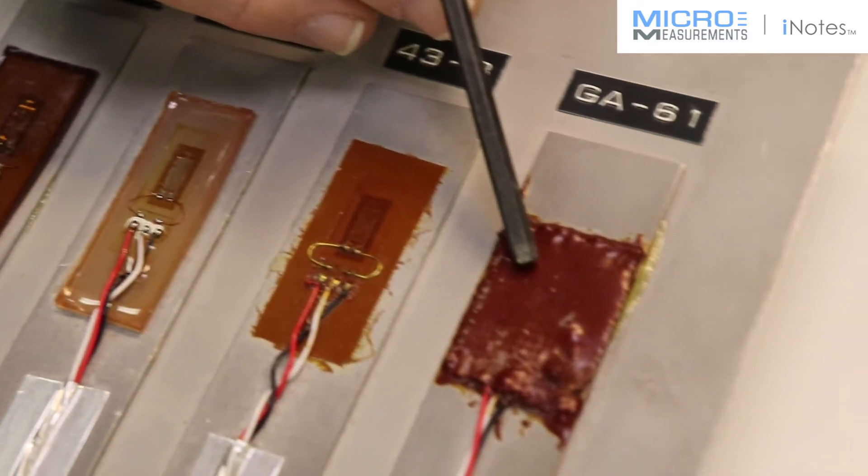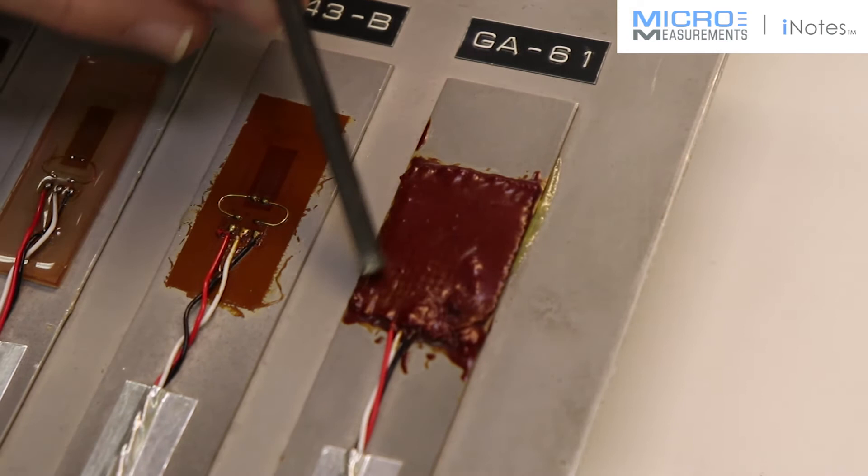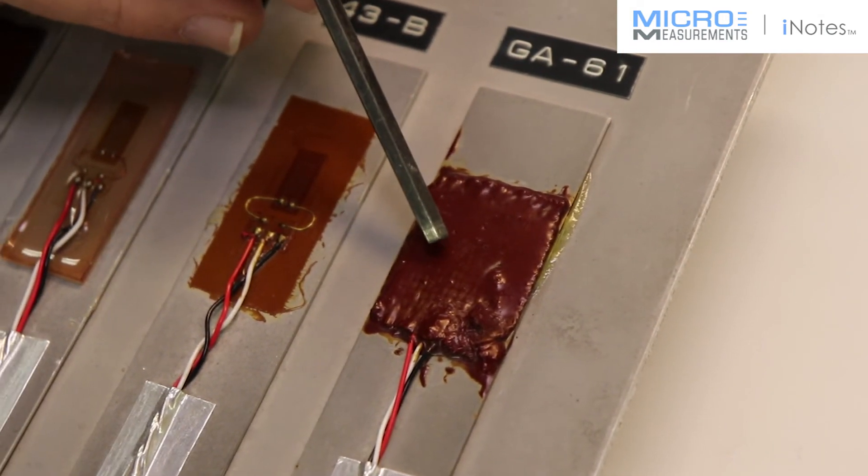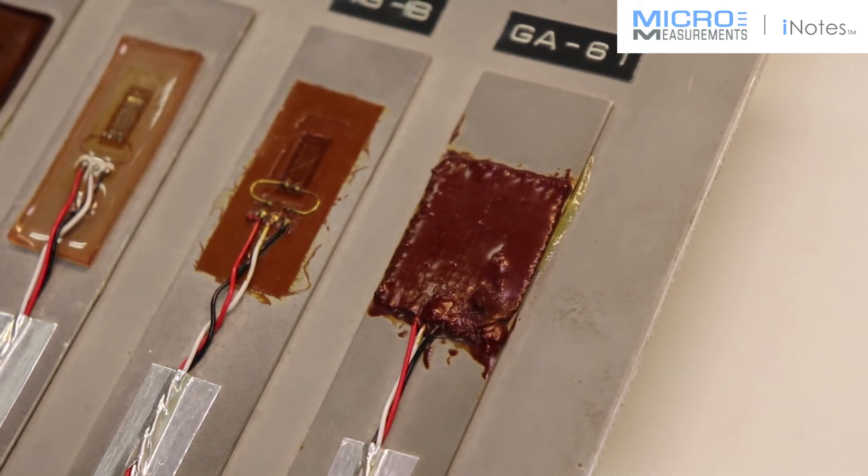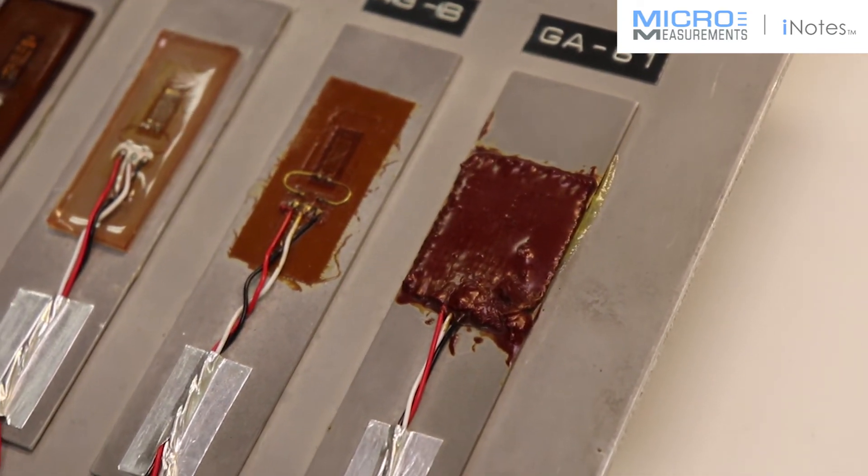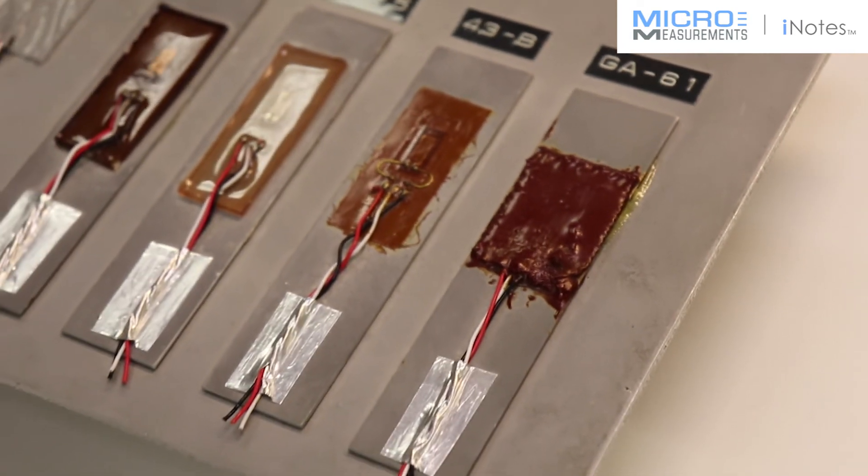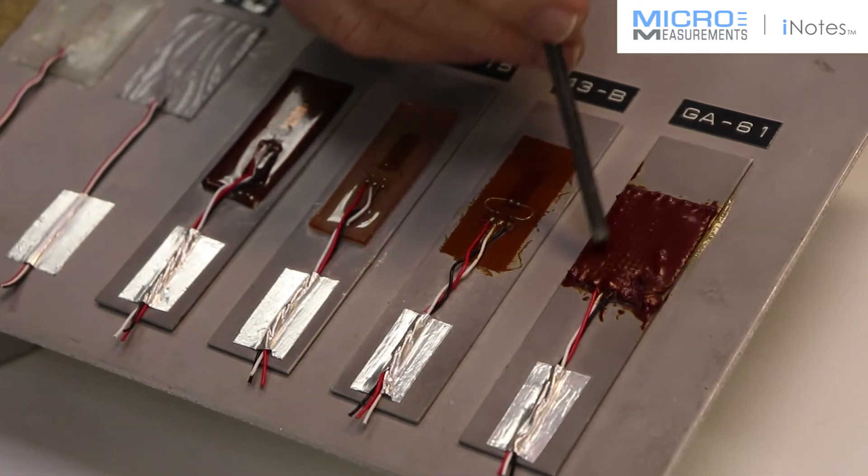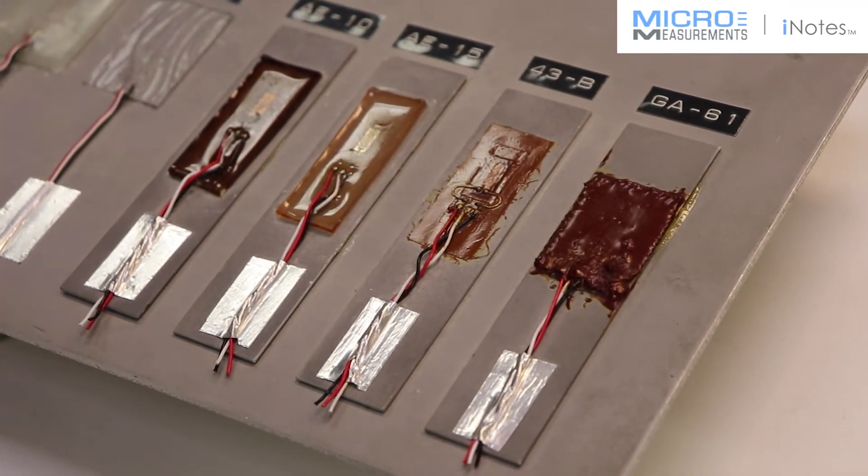The last one is our GA61, and you can't really tell it well from this picture, but it has fiberglass cloth inside of it to stabilize it. The reason for that is this is an elevated temperature cure epoxy, and as it is curing, it expands at about 50 parts per million. And as it cooled off, if you didn't have the fiberglass cloth in there, it would fracture.